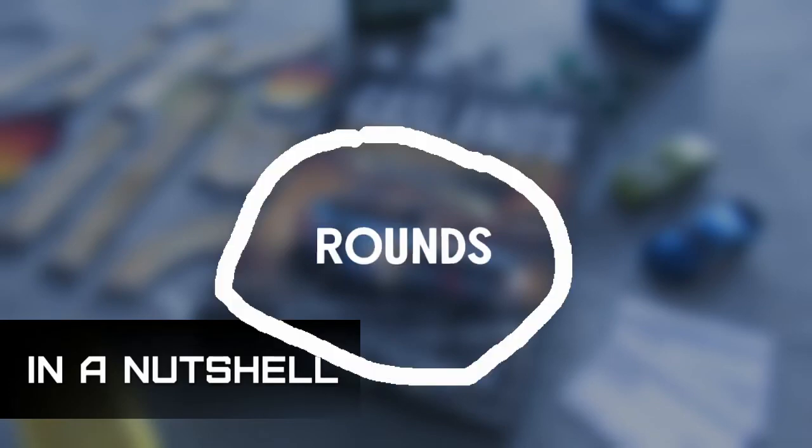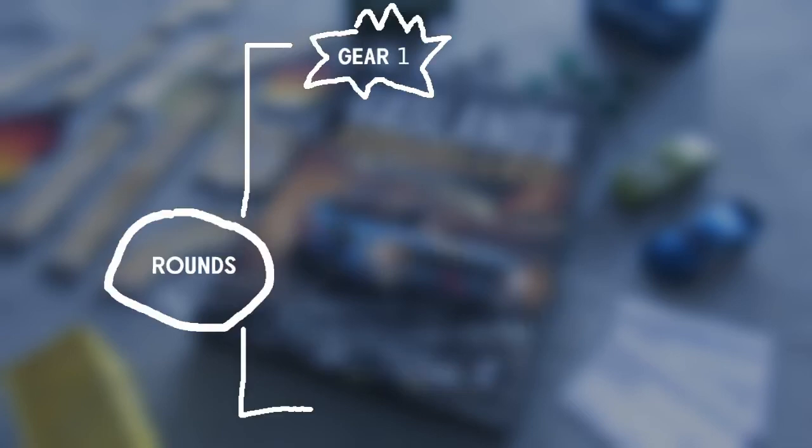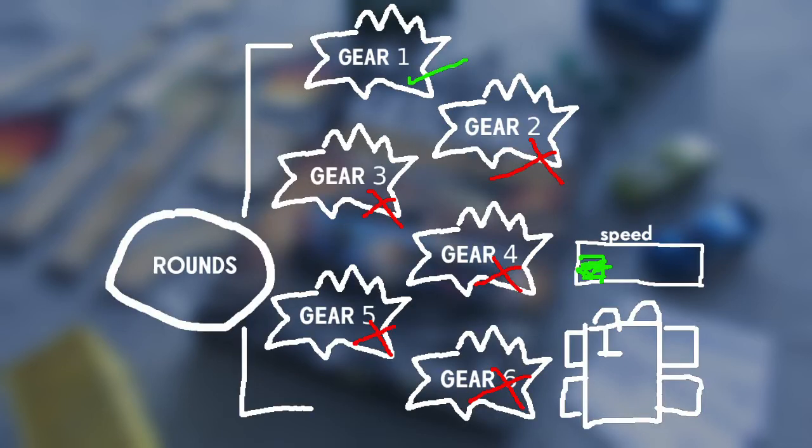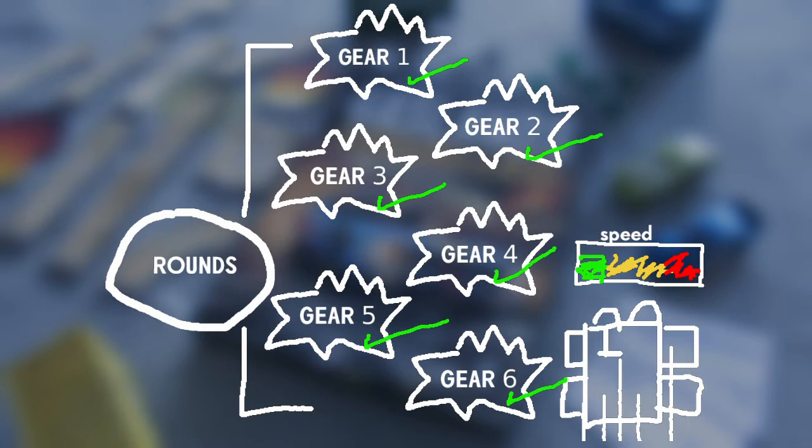In a nutshell, Gaslands is a game of rounds, which are split into gear phases. Each round has 6 gear phases, starting from gear 1 going through to gear 6. Each vehicle has a current gear and may activate in each phase that is equal to or lower than that current gear. Vehicles move using movement templates and may shoot their weapons after each activation. A car in gear 1 only activates in gear phase 1. A car in gear 6 can activate in all of the gear phases. To quote the book, driving fast is good.